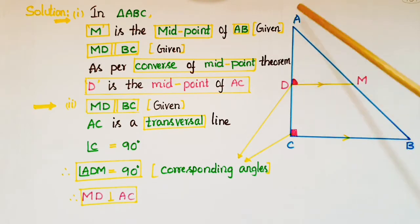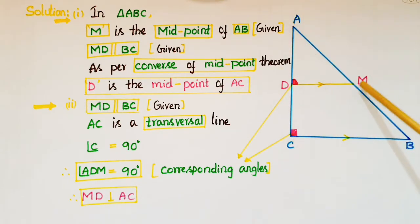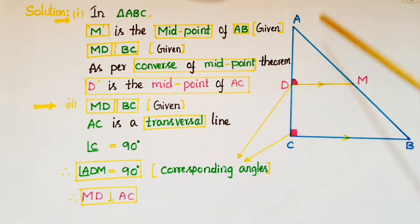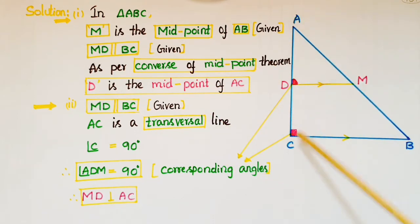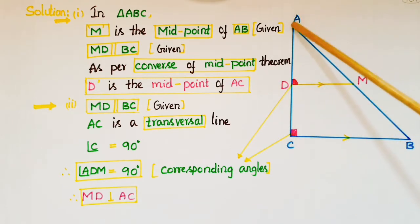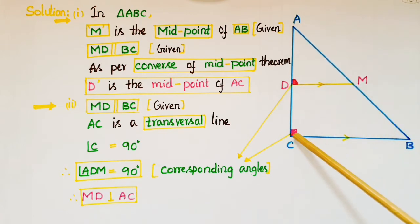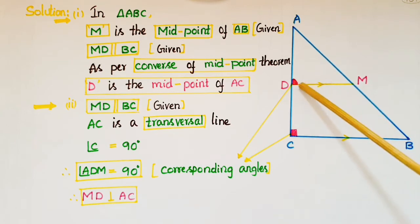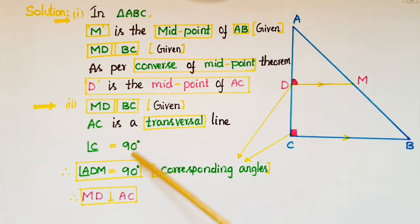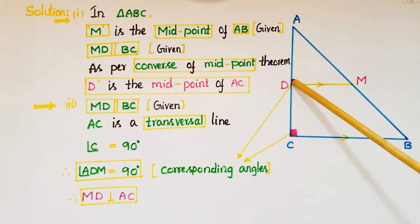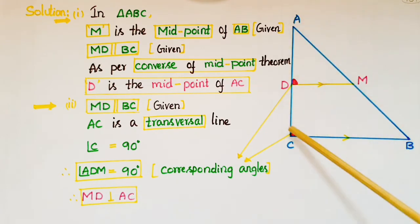Now we have to prove that MD is perpendicular to AC. MD is parallel to BC — this is given — and AC is a transversal line. We know that if a transversal intersects two parallel lines, the corresponding angles are equal. The corresponding angles here are angle ADM and angle C, and angle C equals 90 degrees as given. So angle ADM is equal to 90 degrees, which means MD is perpendicular to AC.